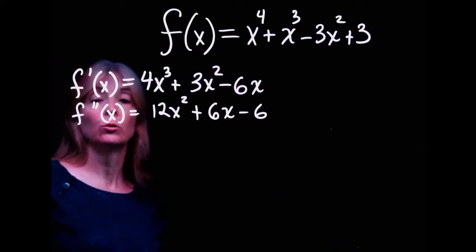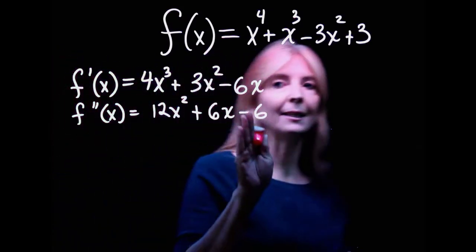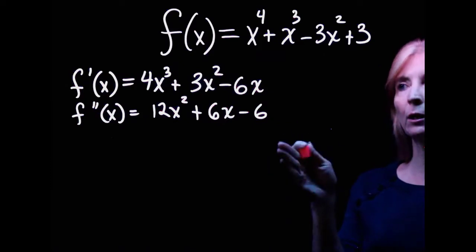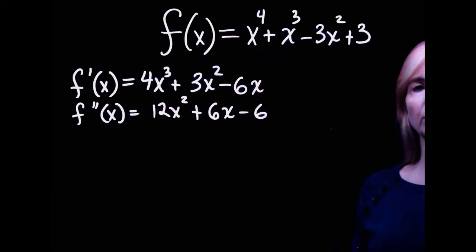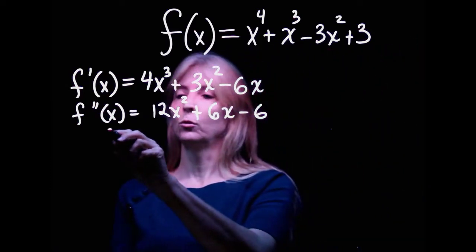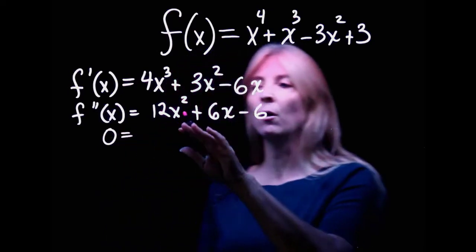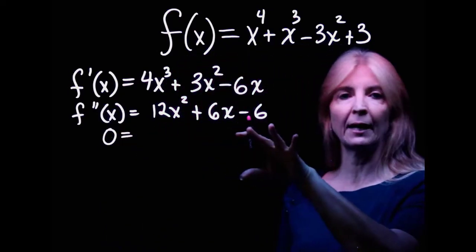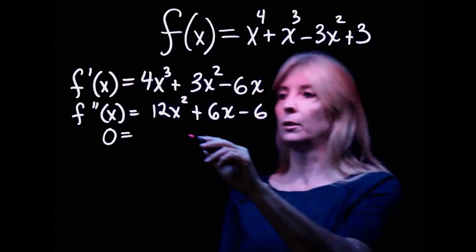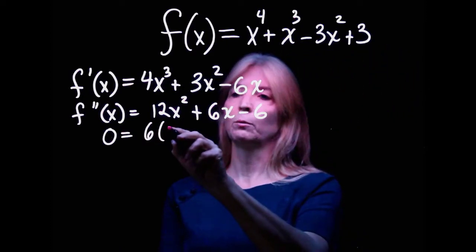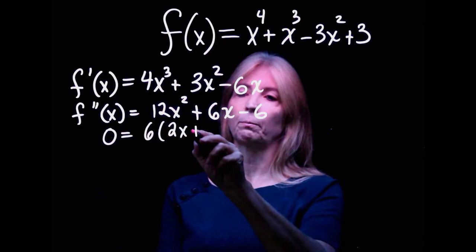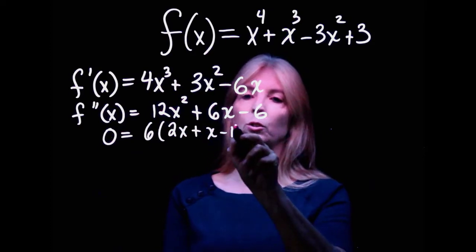Alright, so to find inflection points, you set this second derivative equal to 0 and then you solve for x. So 0 equals, I already see here that I'm going to factor out a 6. So let's go ahead and do it now, which leaves me with 2x squared plus x minus 1.